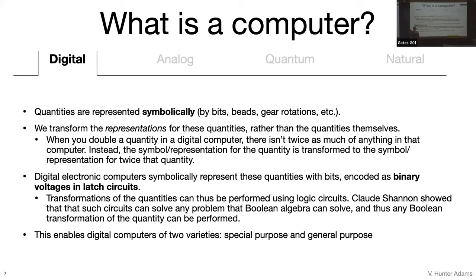One nice feature of this representation is that we can affect any transformation we care about. The other nice feature is that those transformations occur really fast. In contrast to a mechanical digital computer where we have to turn some crank and the physics relates to moving gears, the transformation in digital electronic computers using voltages and latched circuits can happen as fast as the physics of electricity—so it's much, much faster.